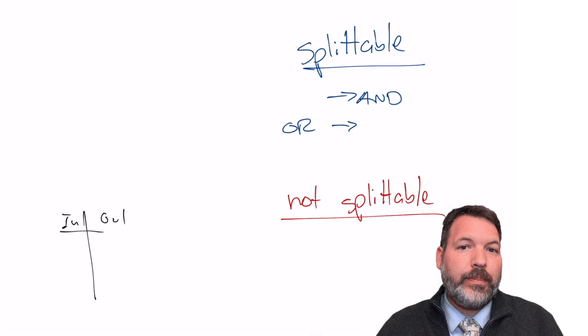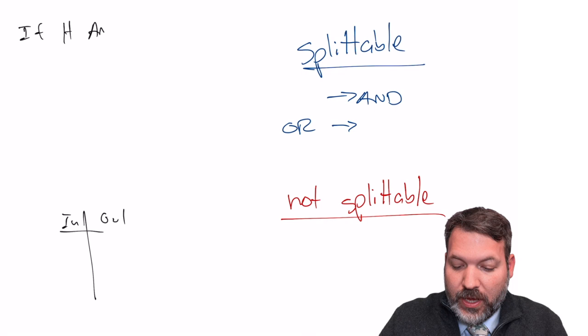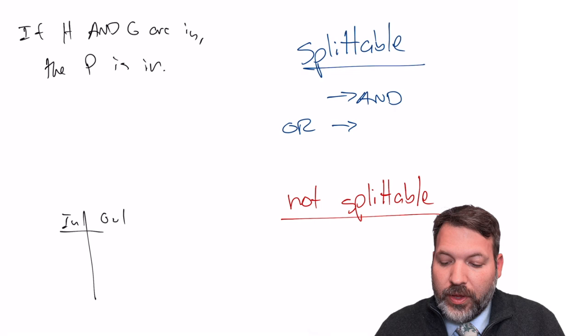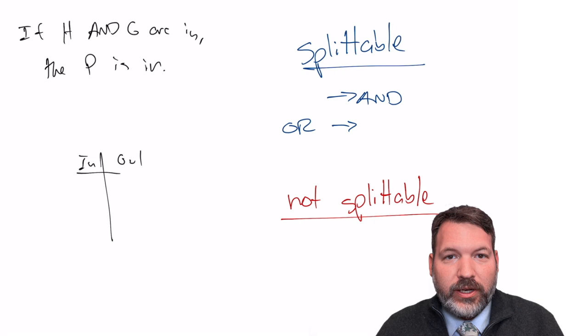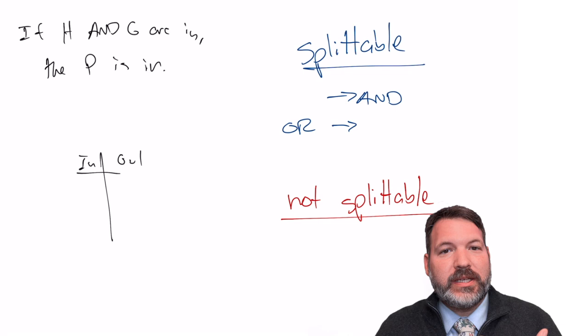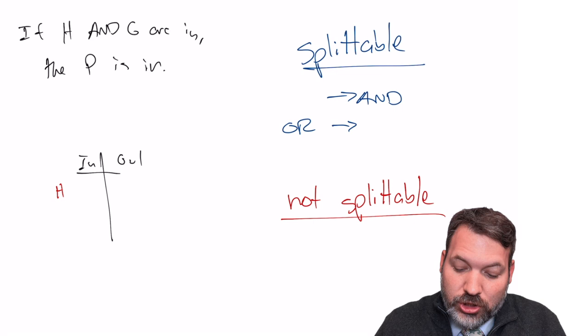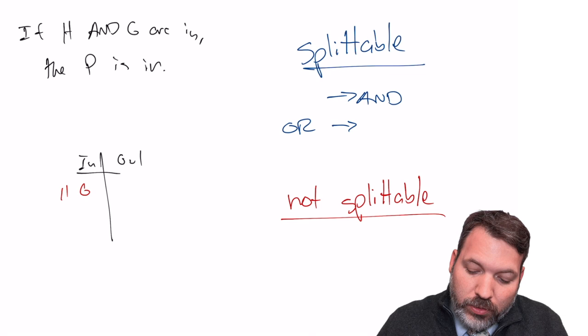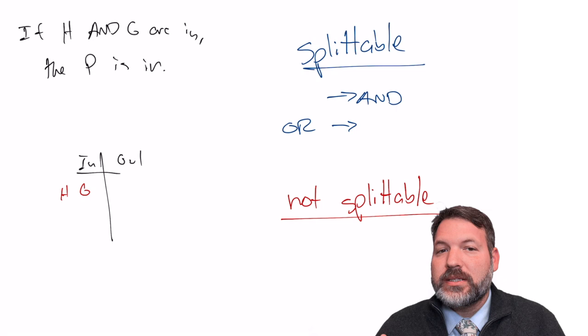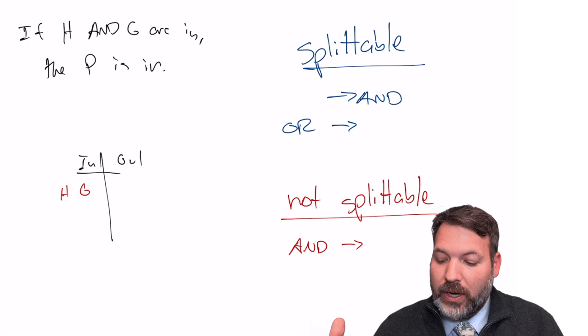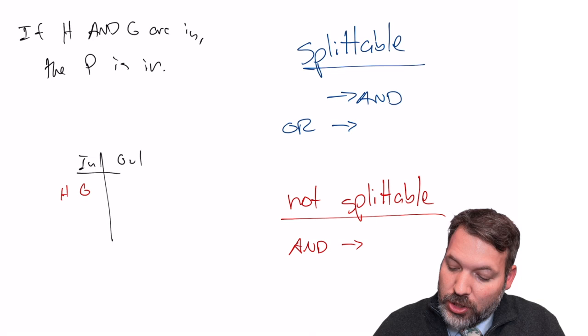Now what about when AND precedes the arrow? For example: 'if H and G are in, then P is in.' Can I separate H and G? Only seeing H inside alone — is that enough to conclude P is in? No. Only seeing G — is that enough? No. This clue only activates when both H and G are inside. So when AND is on the antecedent (if) side, that is NOT a splittable statement.